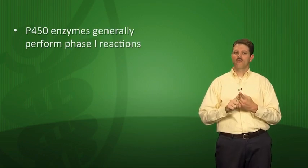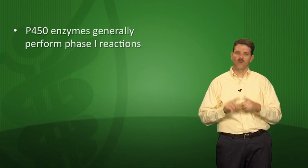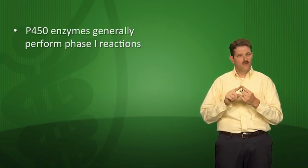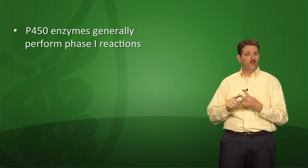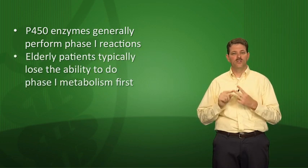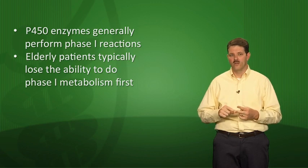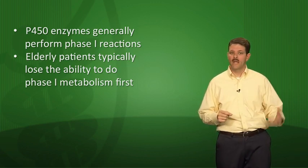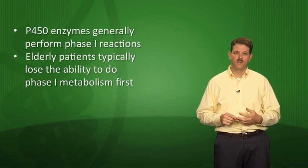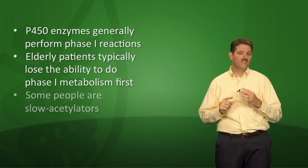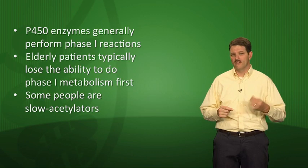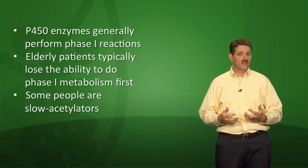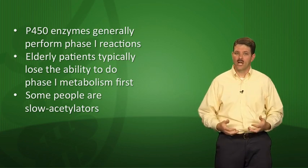Three quick bullet points: first, cytochrome P450 enzymes generally perform phase one reactions — remember phase one equals P450. Second, elderly patients typically lose the ability to do phase one metabolism first, but they can still do phase two conjugation reactions like glucuronidation and acetylation.